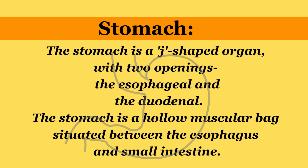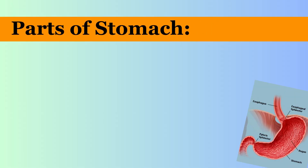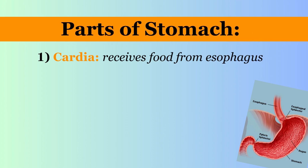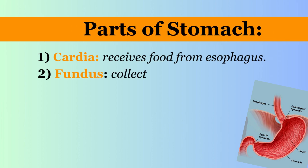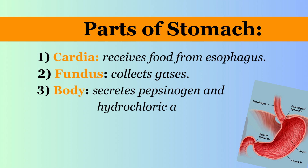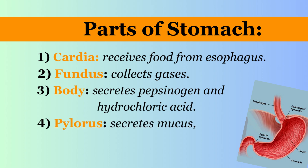Parts of Stomach: 1. Cardia — receives food from the esophagus. 2. Fundus — collects gases. 3. Body — secretes pepsinogen and hydrochloric acid. 4. Pylorus — secretes mucus, gastrin, and pepsinogen.